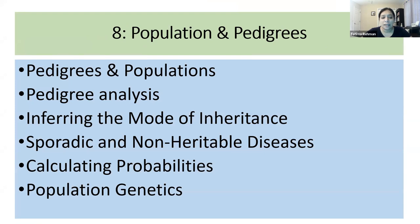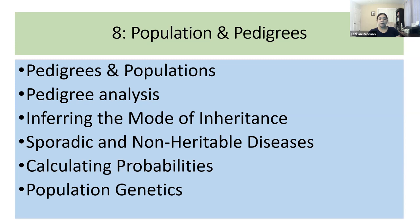So what's going to be part of this lecture? It's probably going to be over two lectures, but we are going to be talking about pedigrees and population. We'll talk about pedigree analysis, how we can infer the mode of inheritance in a pedigree, sporadic and non-heritable diseases, calculating probabilities in different populations or in a family given the pedigree, and finally the Hardy-Weinberg equation and how it is used to look at the chance of a particular phenotype spreading in a population.